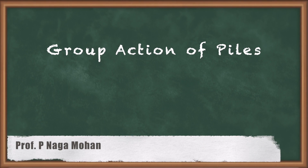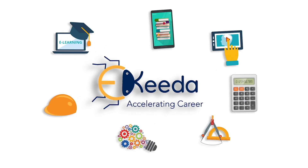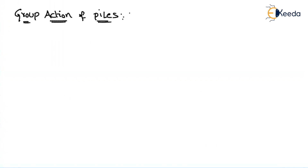In this video we will discuss the group action of piles. So far we have seen the capacity of a single pile. Now we will discuss how to find the group capacity when there are more piles, and how they behave. In deep foundations we don't construct a single pile — we construct a number of piles. The minimum number of piles for construction should be equal to 3, as per the prescribed value. So if you want to construct a pile foundation, you have to construct a minimum of three piles.